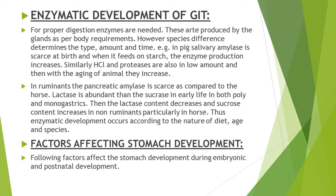Now let's talk about the enzymatic development of the gastrointestinal tract. For proper digestion, enzymes are always needed and are produced by glands as per body requirements. Species differences determine the type, amount, and timing of enzyme secretion. In pigs, salivary amylase is present in very low amounts at birth, and when the animal feeds on starch the enzyme production increases. Similarly, hydrochloric acid and proteases are also in low amounts at birth and increase with the aging of the animal.